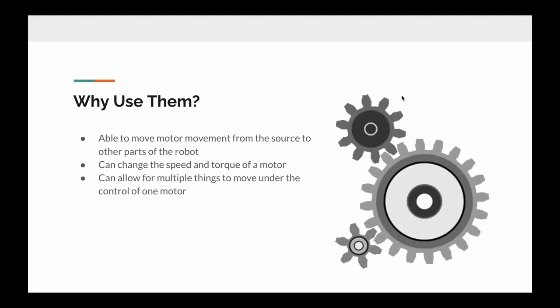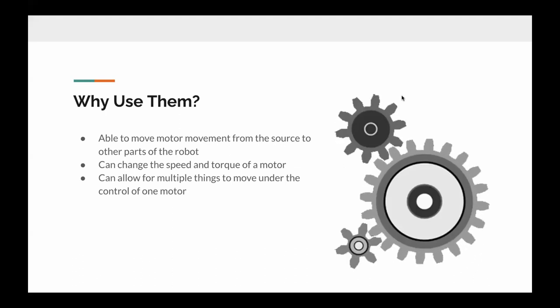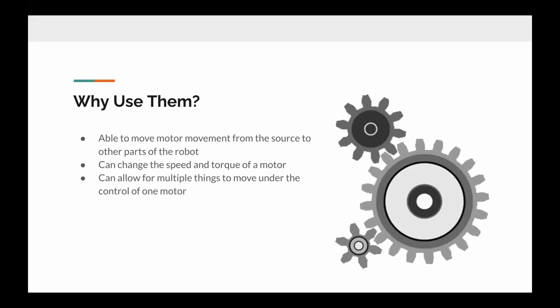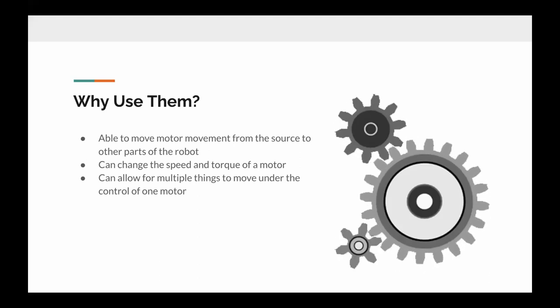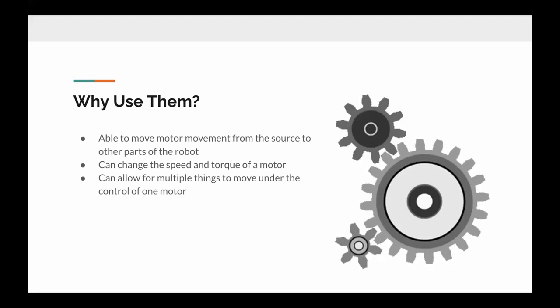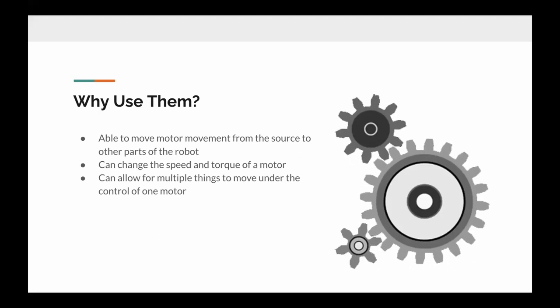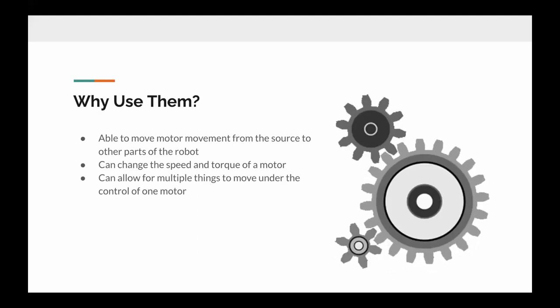To begin with, gears are important because they're able to transfer motor movement from the source, which is the motor, to other parts of the robot like an attachment. They're also able to change the speed and torque of a motor, and they can allow for multiple things to move under the control of one motor.